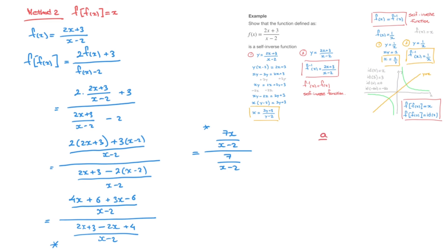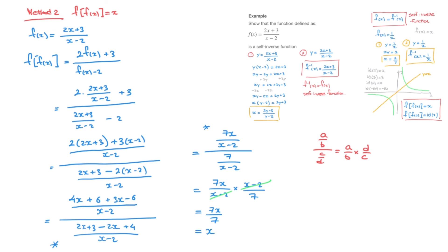Remembering that a over b, over c over d, equals a over b times d over c, I rewrite this as 7x over x minus 2 times x minus 2 over 7. The x minus 2s cancel, leaving 7x over 7, which equals x. We've just shown that the composite of f with itself equals x, and that tells us that f is a self-inverse function.